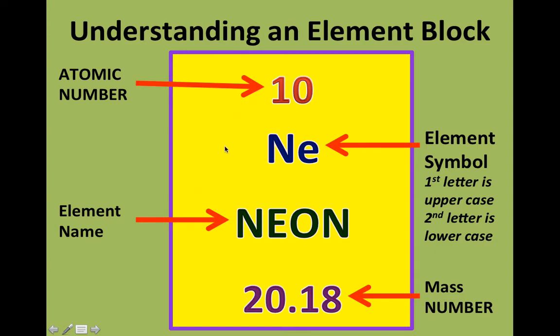Just to review this element block again, 10 up here is our atomic number, number of protons. NE is the symbol. The first letter is always capitalized. The second one, if it has a second letter, is always in lowercase. Then, you have your name underneath it, and then you have your mass number, which is number of protons plus number of neutrons.